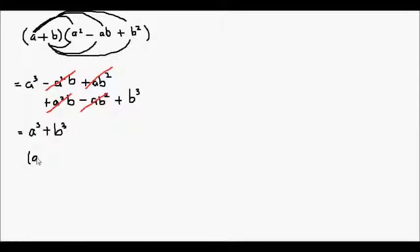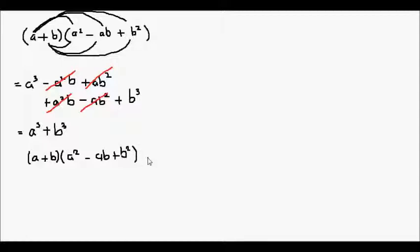So this expansion, or identity, is what we know as the sum of cubes. So a plus b, the binomial, times a squared minus ab plus b squared, the trinomial or polynomial, will equal a cubed plus b cubed.